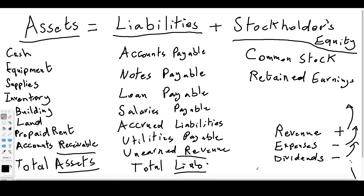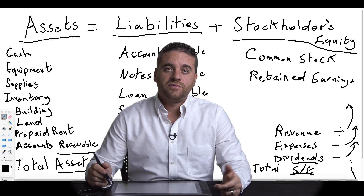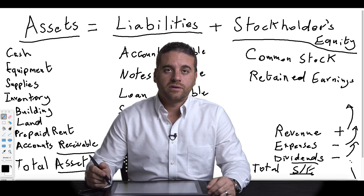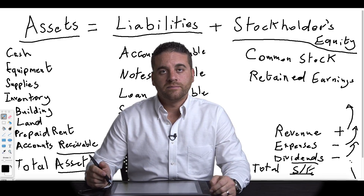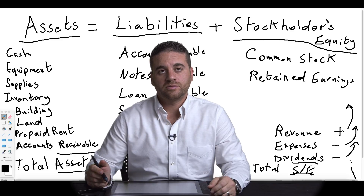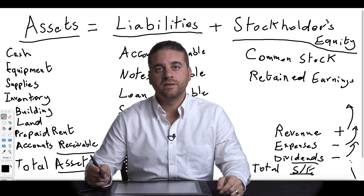Once you add all liabilities you get total liabilities, and once you add common stock and retained earnings you get total stockholders' equity. That was the first video for chapter one — just part one. We will talk about part two in the next video.